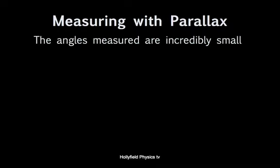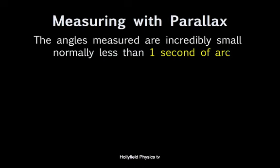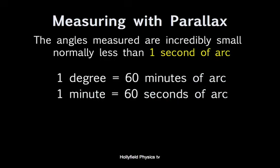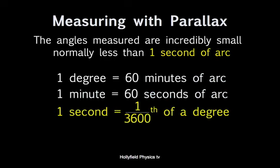We're talking about angles that are ridiculously small. One degree is 60 minutes of arc. One minute, 60 seconds of arc. So one second of arc is one 3,600th of a degree.